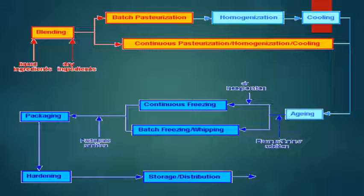Here is another flowchart for preparation of ice cream. Liquid and dry ingredients are mixed by blending. Then there are two pathways: batch pasteurization and continuous pasteurization. In batch, homogenization, cooling, and then aging. In continuous, pasteurization, homogenization, and cooling come together before aging. Then air incorporation and flavoring are added. The mix goes for either batch freezing or continuous freezing, during which air is incorporated — called whipping. After that, packaging, hardening, and storage.